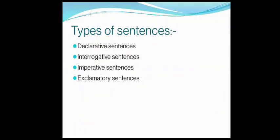Now let us come to the types of sentences. Basically, there are four kinds of sentences: first is declarative sentence, second is interrogative sentence, third is imperative sentence, and the last one is exclamatory sentence. In the next slide, I am going to explain the meaning as well as give the definition of all these sentence types.